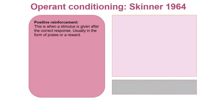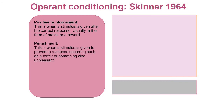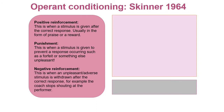Positive reinforcement is when a stimulus is given after the correct response, usually in the form of praise or a reward. A punishment is when a stimulus is given to prevent a response occurring, such as a forfeit or something unpleasant to prevent them from doing that again - a detention is meant to be a punishment to prevent you doing something again. Negative reinforcement is when an unpleasant or adverse stimulus is withdrawn after the correct response; for example, the coach will stop shouting at the performer.